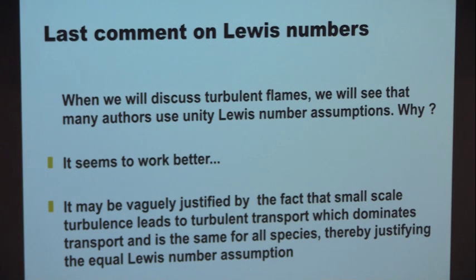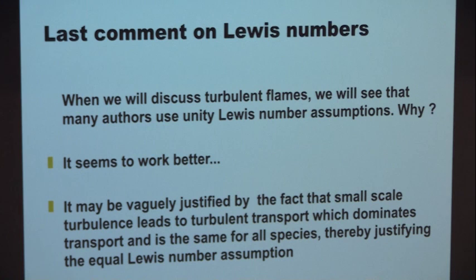Many turbulent combustion models begin by assuming Lewis equal unity for everyone. The best argument to do it is that it makes your life much simpler. But you have to be worried: if you go to Chemkin or Cantera and compute a premixed laminar flame speed with all Lewis numbers set to unity, the flame speed will be wrong by 60%. So we know that in a real flame Lewis numbers are not equal. But in the world of turbulent combustion, sometimes there are things you need to do.